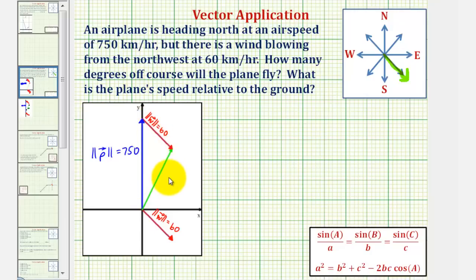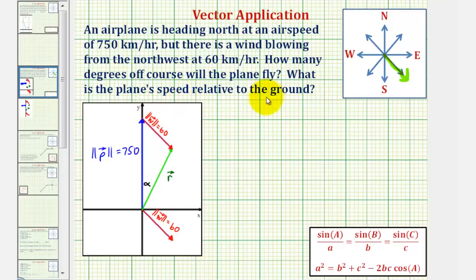The resultant vector would be this green vector, with the initial point at the initial point of vector p, and the terminal point at the terminal point of vector w. Notice when we do this, we form a triangle. The number of degrees the plane would be off course would be this angle here, which we'll call angle alpha. The plane's speed relative to the ground would be the length of this green vector, or the magnitude of vector r.